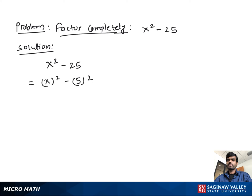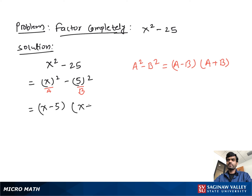If we see this, it looks like an a squared minus b squared form. We know that a squared minus b squared is equal to a minus b times a plus b. If we suppose x as a and 5 as b, we can write this as x minus 5 times x plus 5, and this is our complete factorization.